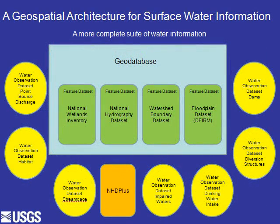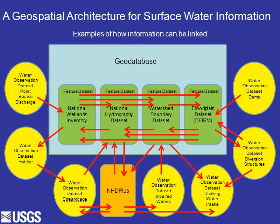In our design of a dataset, we might want to look at more information besides just the National Hydrography Dataset and the Watershed Boundary Dataset — such as the National Wetlands Inventory, 100-year floodplains like the DFIRM dataset, point source discharges, biologic habitat, stream gauges, impaired waters, drinking water intakes, diversion structures, dams, and the NHDPlus dataset. We can link all this information using network addresses as pointers.